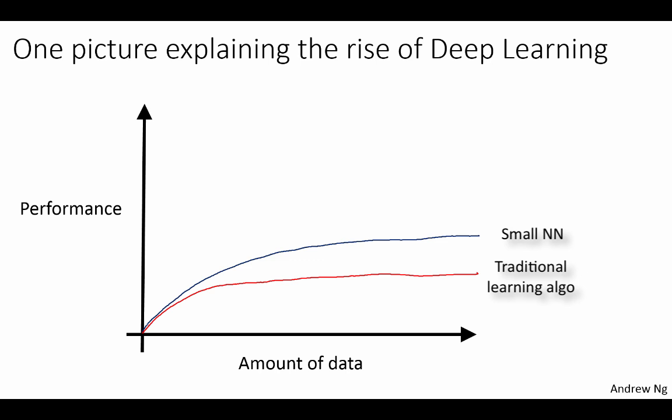But one of the exciting things about neural networks is that if you then train a somewhat larger neural network, maybe then the performance starts to get better and better even as you increase the amount of data. That's maybe how well you do if you train a medium-sized neural network. And if you train a very large neural network, then your performance might look like this, the performance just keeps getting better and better as you increase the amount of data.